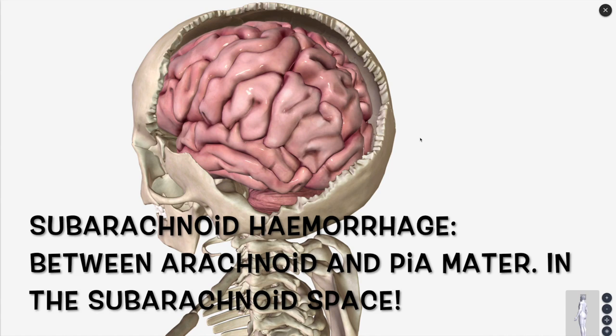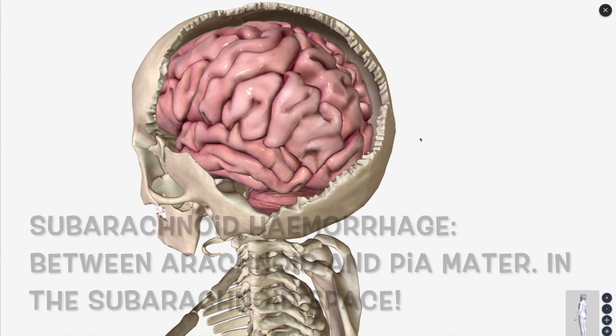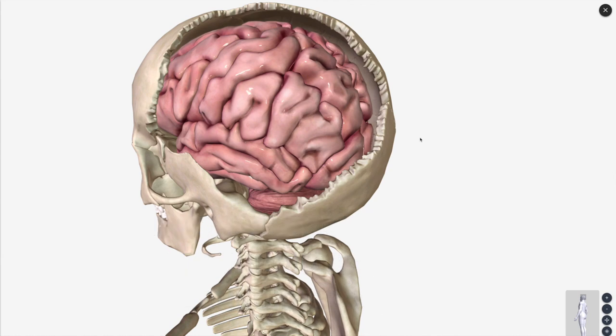In terms of the meningeal layers, just remember you've got your skull, and then your dura mater, then your arachnoid mater, then your pia mater. So: dura mater, arachnoid mater, and then pia mater.